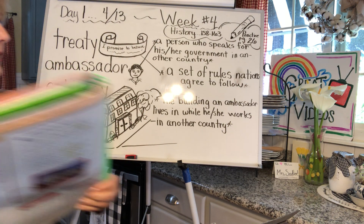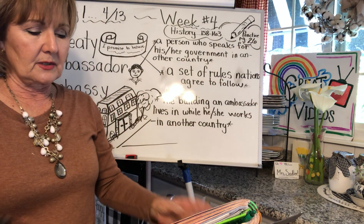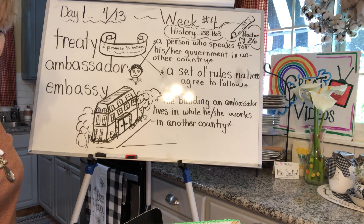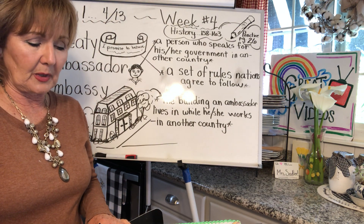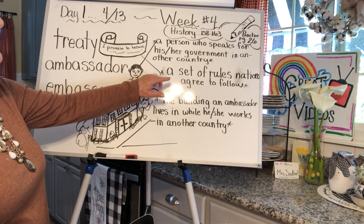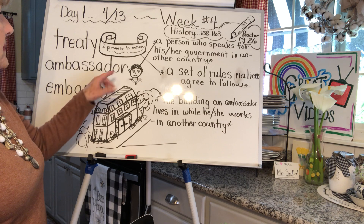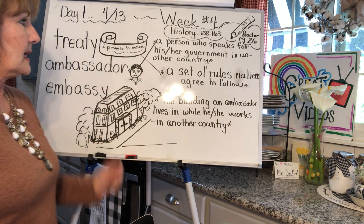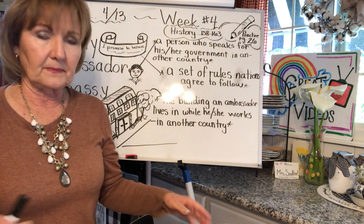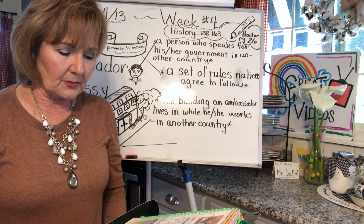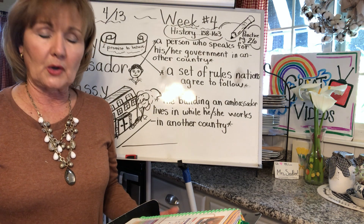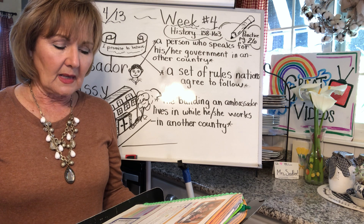Go ahead and take out practice page 26 — we're going to do a little review. Put your heading on it so you don't get out of the practice of heading your papers. Remember: a treaty is a set of rules nations agree to follow in order to get along; an ambassador is the person who speaks for his or her government in another country; and an embassy is the building the ambassador lives in while working in that other country. This section is called 'Nations Around the World.' Circle yes if the statement is true, circle no if it is not true.